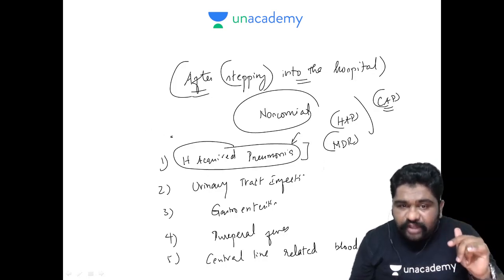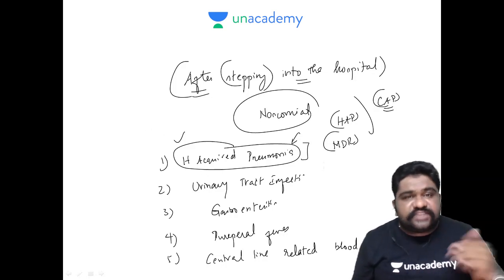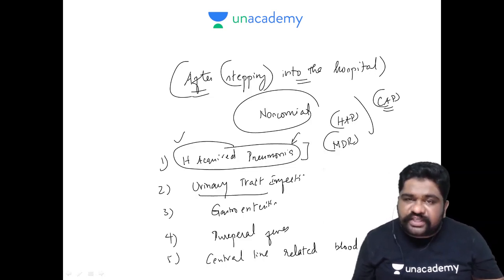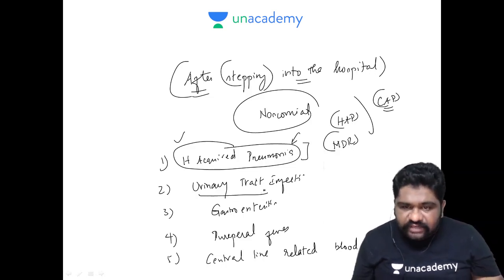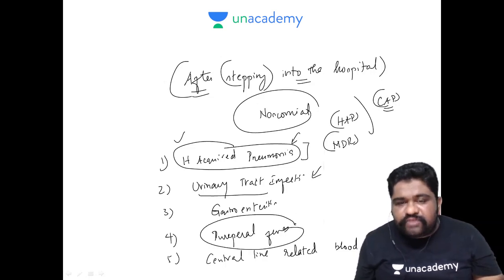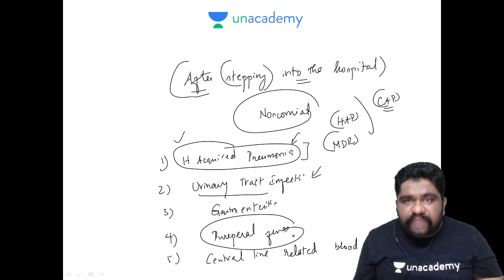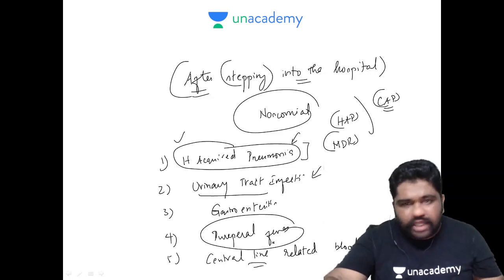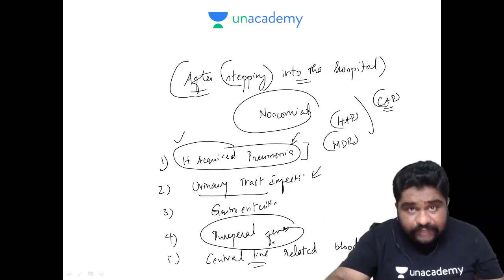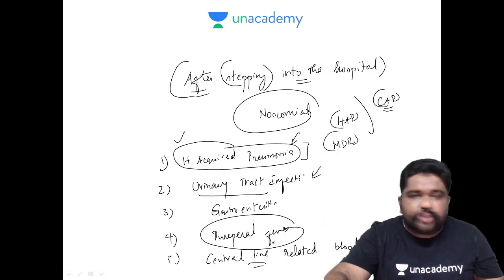But if you get pneumonia after coming into the hospital, there is a very good chance it can be a multi-drug infection. When using a urinary catheter for a patient, that can lead to infections called UTI. Puerperal fever speaks about infections that happen in the peripartal region and duration, and central lines can lead to bloodstream sepsis. These are the types of classification of nosocomial infection.